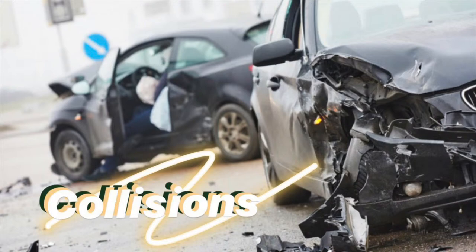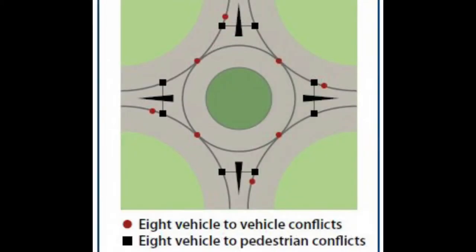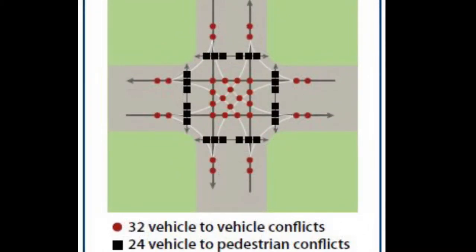Another benefit roundabouts bring is the reduction of collisions. As shown in data provided by the Federal Highway Administration, roundabouts provide a significant reduction in injury, pedestrian, and fatality collisions. Roundabouts provide geometry that allows a smooth transition, permitting only 8 vehicle-to-vehicle conflicts and 8 vehicle-to-pedestrian conflicts. By contrast, 4-way intersections allow 32 vehicle-to-vehicle conflicts and 24 vehicle-to-pedestrian conflicts.